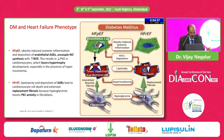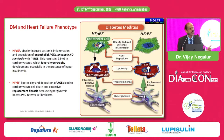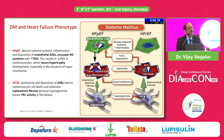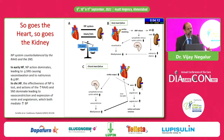In preserved ejection fraction heart failure, obesity is the main driver due to systemic inflammation, excess advanced glycation end-products (AGEs), and hyperinsulinemia causing myocardial hypertrophy. In reduced ejection fraction heart failure, excess AGEs and lipotoxicity play a greater role, with increased fibrosis produced by fibroblasts causing dilation of the myocardium.